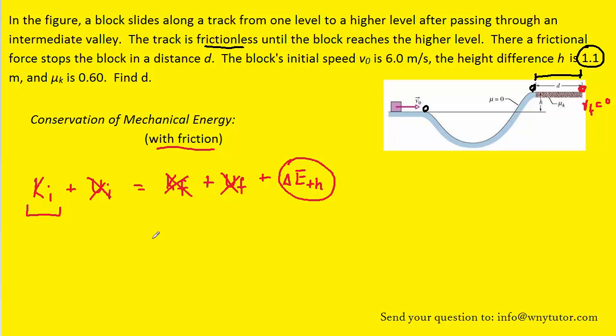Now all we have to do is replace kinetic energy with its representation, and then this thermal energy with its representation. So here is the thermal energy expression. It includes the kinetic frictional force and then the distance across which the object slides. And this is indeed what we're trying to find right here. The kinetic frictional force can be replaced with the expression normal force times the coefficient of kinetic friction. So let's make that replacement.